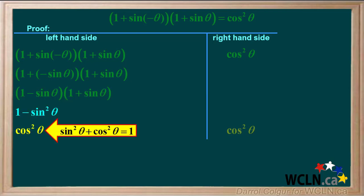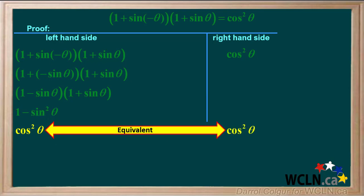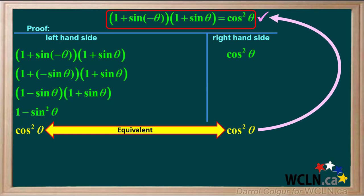Using the Pythagorean identity, sine squared theta plus cosine squared theta equals 1, we get 1 minus sine squared theta equals cosine squared theta. We see that the right-hand side is equivalent to the left-hand side. This proves that 1 plus sine of negative theta times 1 plus sine theta equals cosine squared theta is an identity.